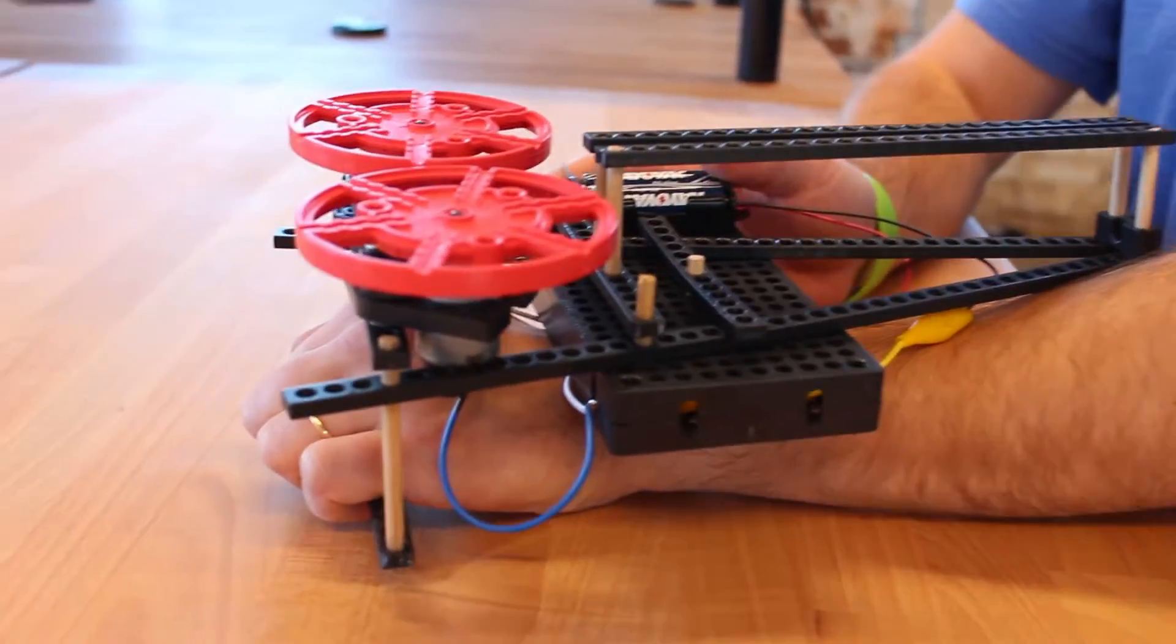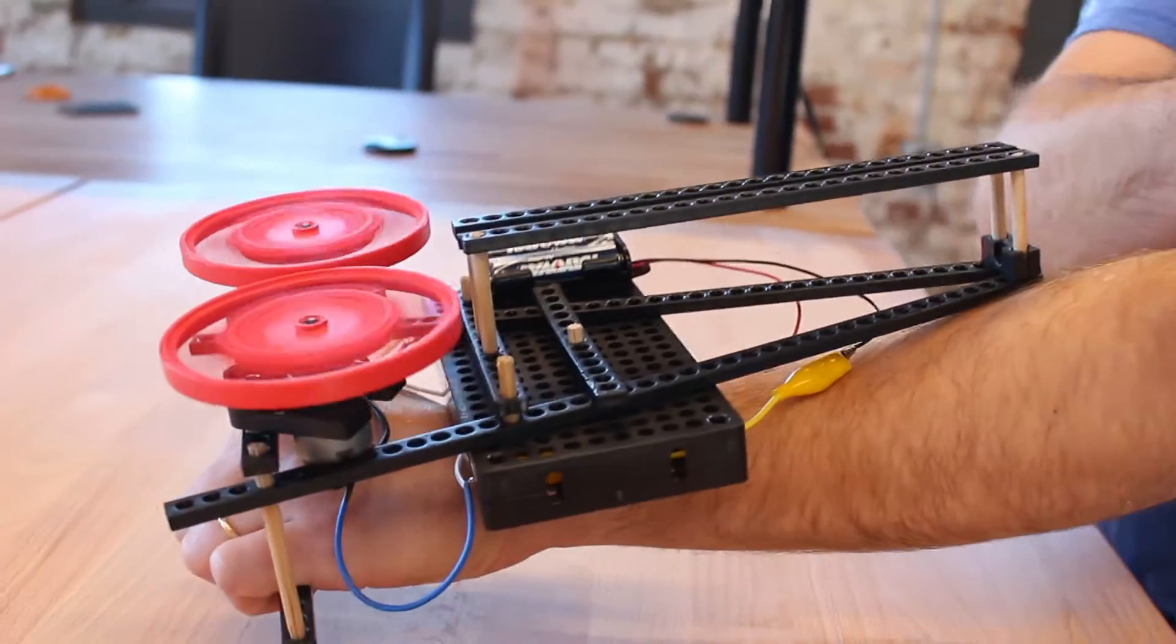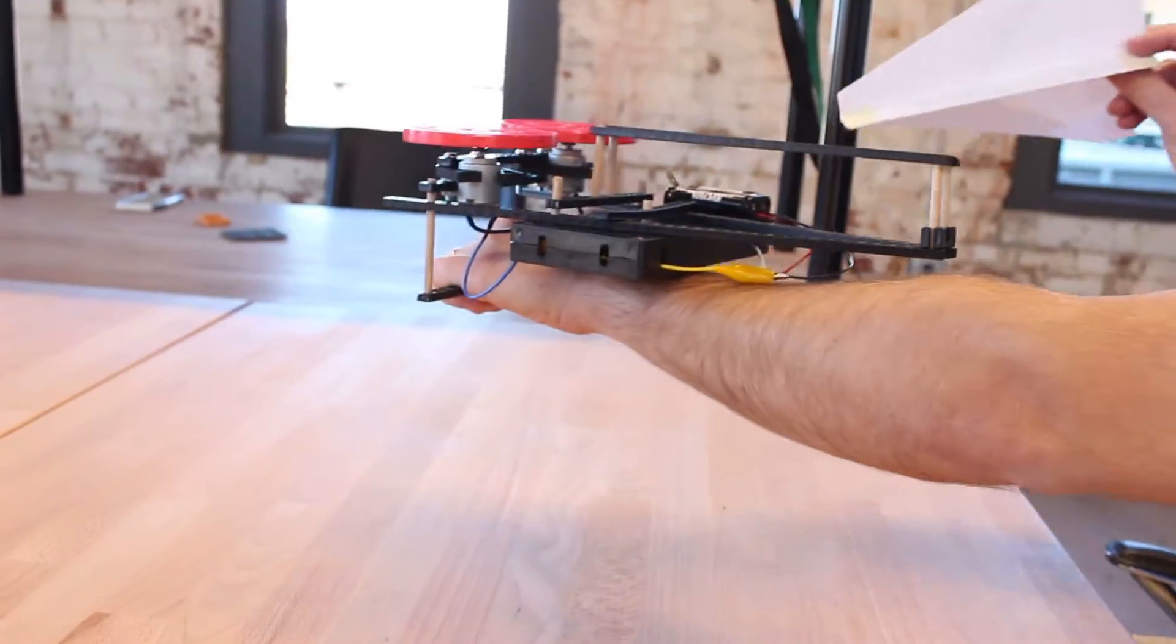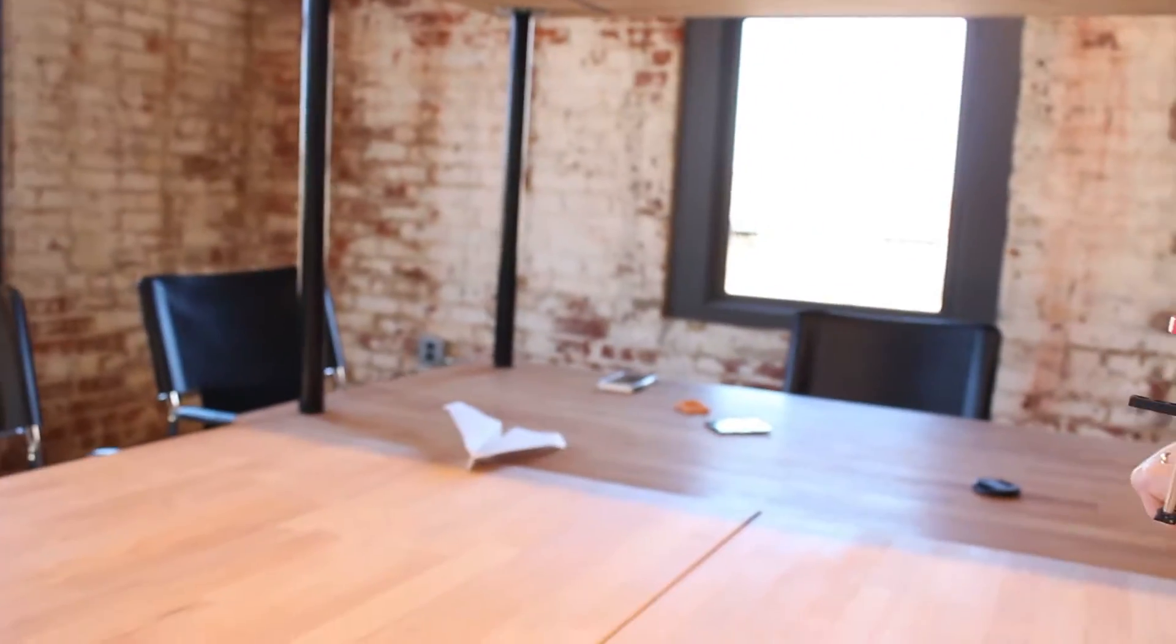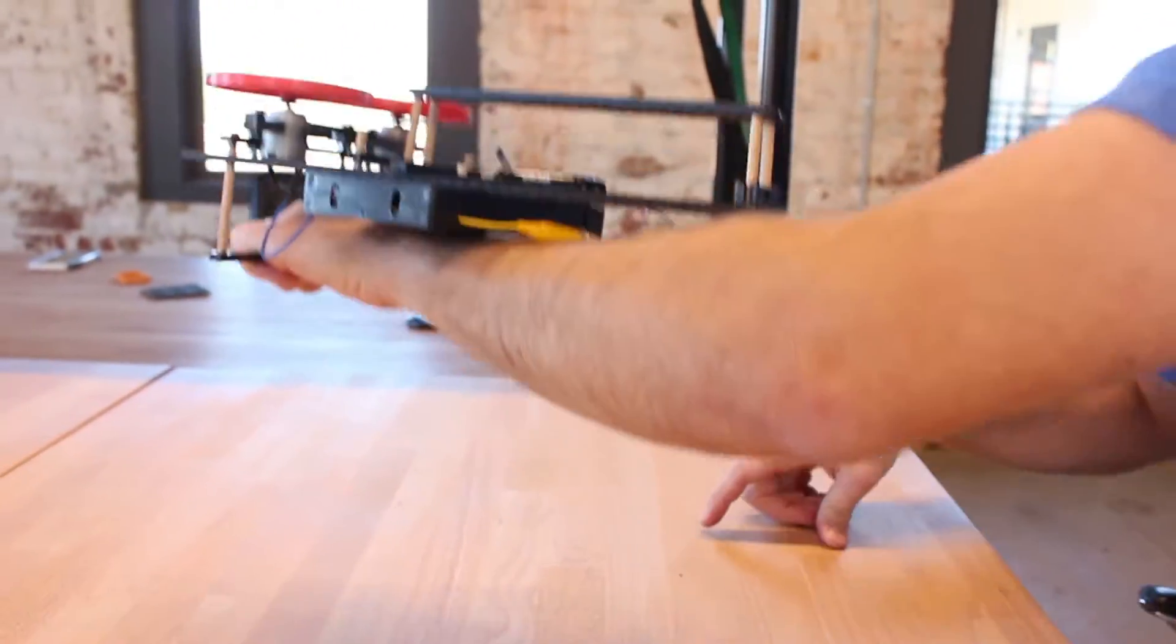It works the same as a baseball pitching machine. These two wheels turn in opposite directions, and when the plane moves through it, the wheels grab the plane and launch it forward. Let's get started.